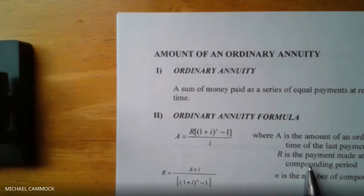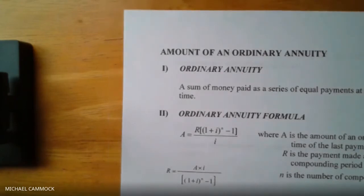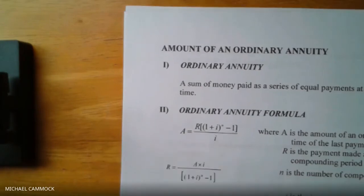R is the regular payment you're putting into the account — say, a hundred dollars a month. I is the same interest rate we've been using: if it's compounding daily we divide by 365, monthly we divide by 12. N refers to the number of compounding periods. Some parts of this formula are things we've seen before — the only thing new is R.